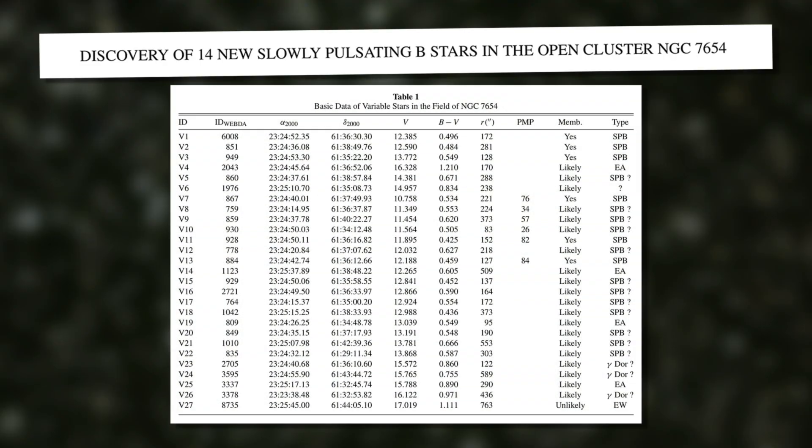For each star, they were measuring the brightness in each of those images and then constructing a curve of how the brightness was getting brighter and dimmer over time. In doing this, they found that this was quite rich hunting ground for variable stars.